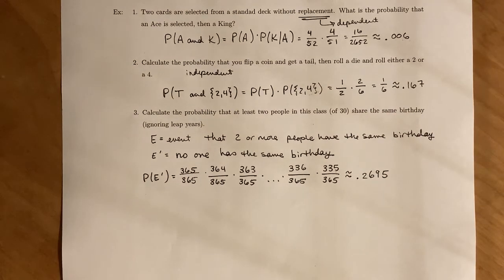So the probability that in a class of 30, that no one has the same birthday is roughly about 27%.